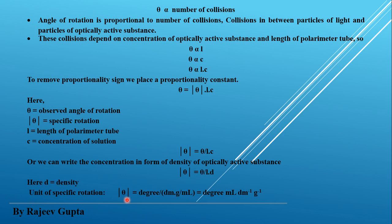The unit of specific rotation: the angle of rotation is measured in degrees, the length of the polarimeter tube is measured in decimeters, and the concentration unit is grams per milliliter. Overall, the unit is degree·mL per decimeter per gram. This is the unit of specific rotation.